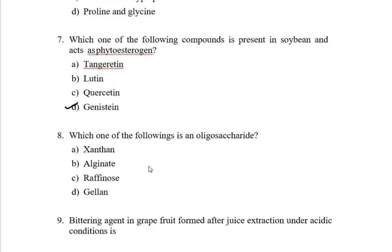Next question: which one of the following is an oligosaccharide? What is an oligosaccharide? Oligosaccharides are formed when two or more monosaccharides are joined together by O-glycosidic bonds. Here, two to ten number of monosaccharides are there.